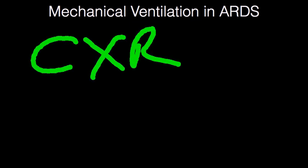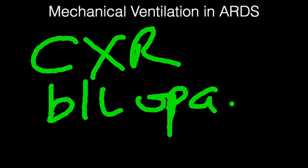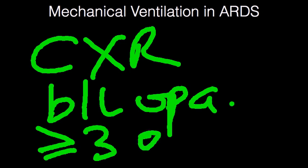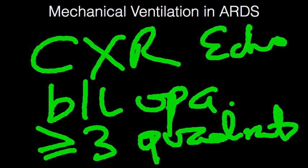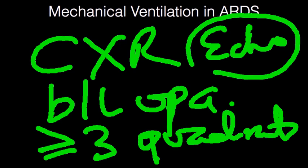The next part of the criteria, apart from the PaO2/FiO2 ratio, is the chest x-ray. The chest x-ray requires bilateral opacifications affecting three or more quadrants of the lungs. The caveat is this should not include patients with pulmonary edema due to heart failure, so a bedside echo may be useful. The previous definition used a wedge pressure of less than 18, but evidence showed wedge pressures above 18 could still be present in true ARDS, which is why that criterion was removed.